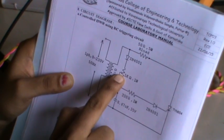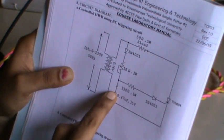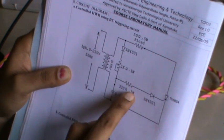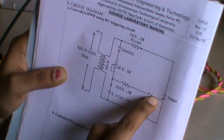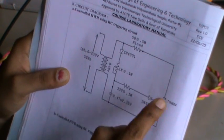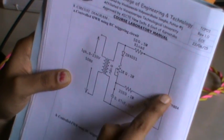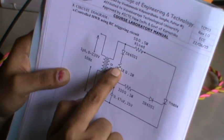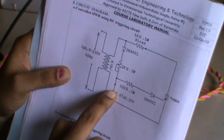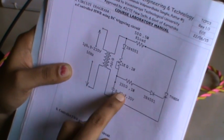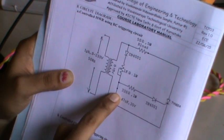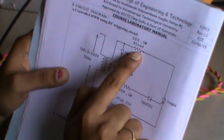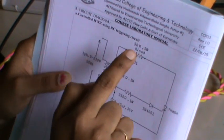Depending upon the R value — if R is more, the time taken to charge this capacitor will be more. Therefore, the firing angle, that is the time taken to turn on the SCR, will be more. It will take more time to turn on, and the voltage going to the load will be less. If R value is less, the RC time constant will be less, so the capacitor will get charged quickly and the SCR will also turn on quickly. The average voltage coming to the load will be more.